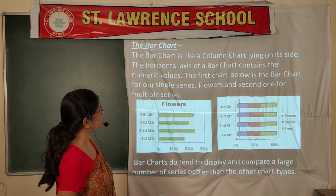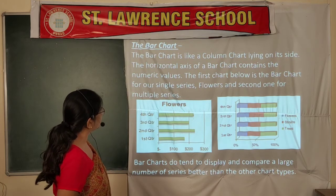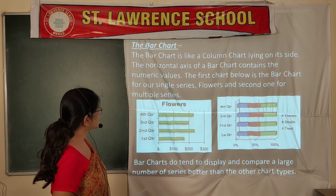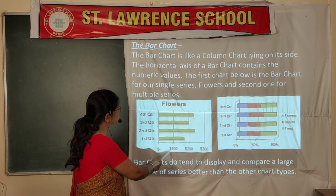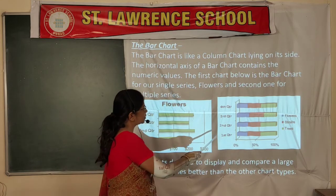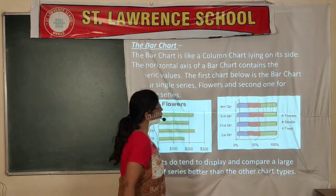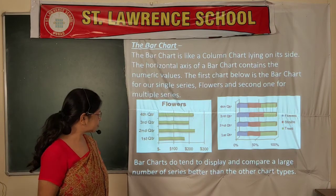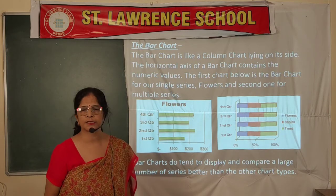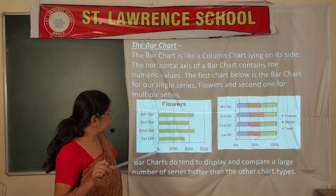The bar chart is like a column chart lying on its side. The horizontal axis contains the numeric values. The first example shows a single series — only flowers — and the second shows multiple series, displaying flowers, shrubs, and trees all together. Bar charts tend to display and compare a large number of series better than other chart types because the bars are equally spaced.